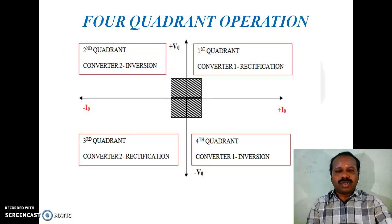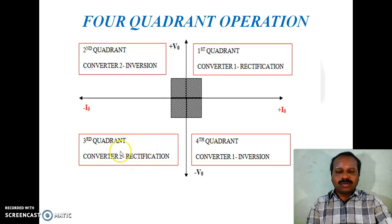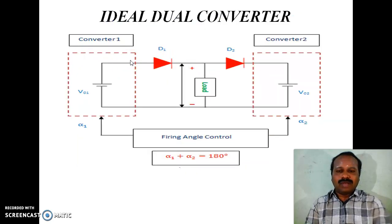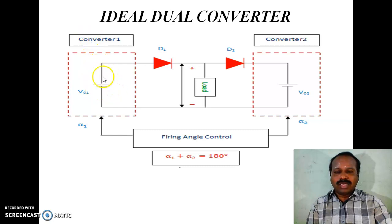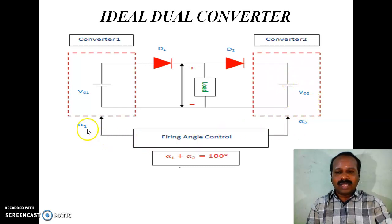The diagram shows four quadrant operation of the dual converter. In the first quadrant, Converter 1 works in rectification mode; opposite to this, in the third quadrant, Converter 2 works in rectification mode. In the fourth quadrant, Converter 1 works in rectification mode; opposite to this, in the second quadrant, Converter 2 works in rectification mode. In the ideal dual converter diagram, Converter 1 output voltage is V01, Converter 2 average output voltage is V02. Firing angle control provides alpha 1 for Converter 1 and alpha 2 for Converter 2 such that alpha 1 plus alpha 2 equals 180 degrees.